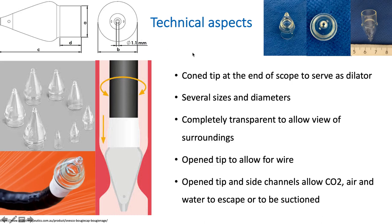What are the technical aspects of the bougie cap? The bougie cap is attached to the distal part of the endoscope so that your endoscope becomes a dilator. The coned tip will dilate different stenosis. There are different types and shapes of bougie caps. This cap is completely transparent, so it allows for a view of the surroundings, and it has an opening tip to allow for passing a guide wire, if needed.